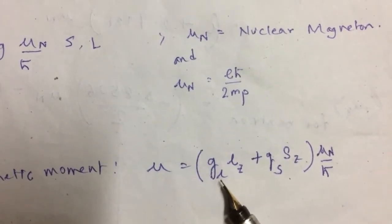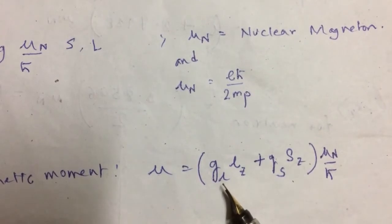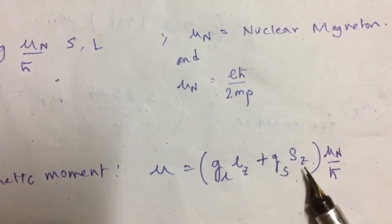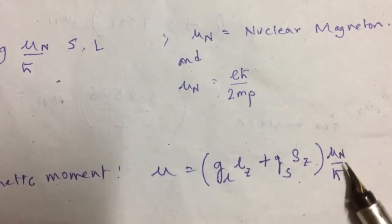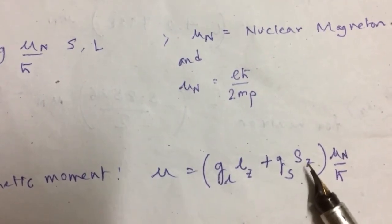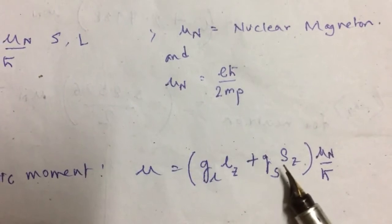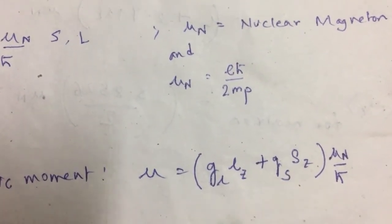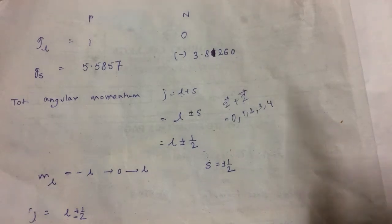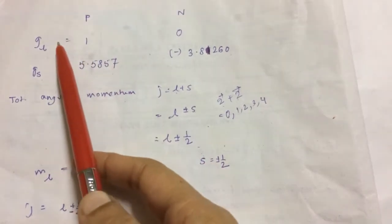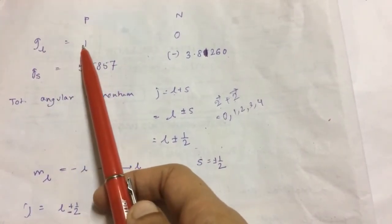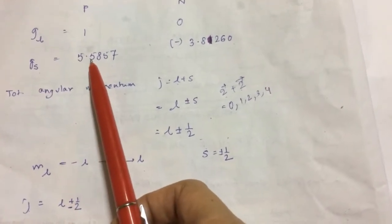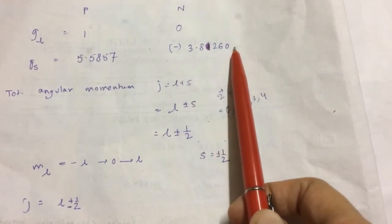The total nuclear magnetic moment was expressed as g mu_n times the relevant angular momentum component along the Z-axis. For the orbital angular momentum g-factor, for the proton G_L is equal to 1, and for the neutron it is equal to 0 since the neutron is chargeless. For the spin g-factor, G_S for the proton is 5.5857 and for the neutron it is minus 3.8260.